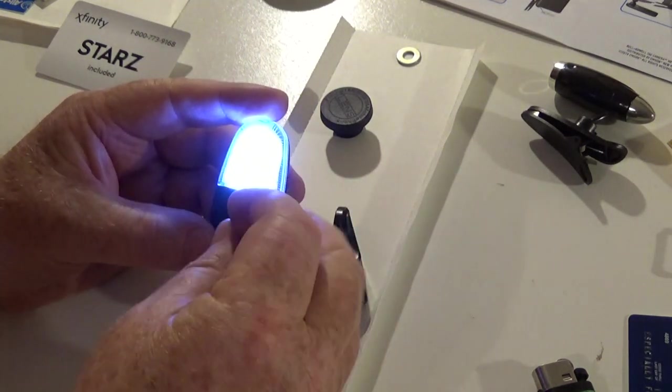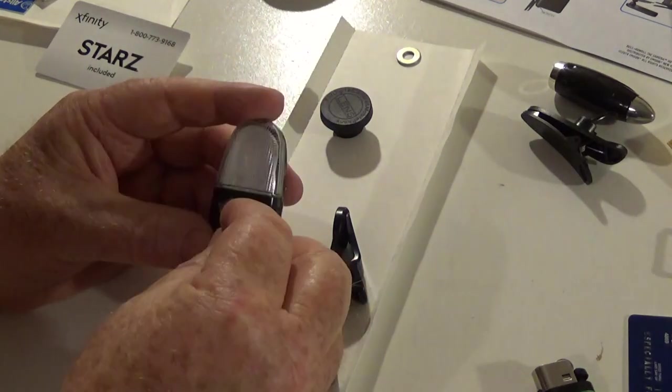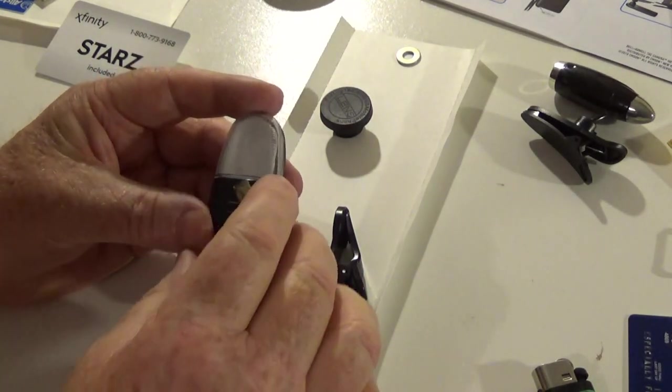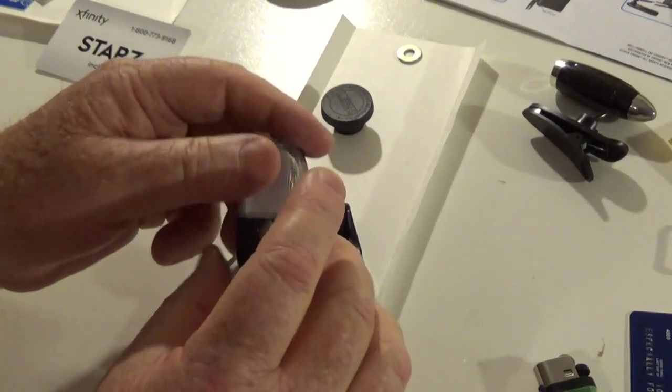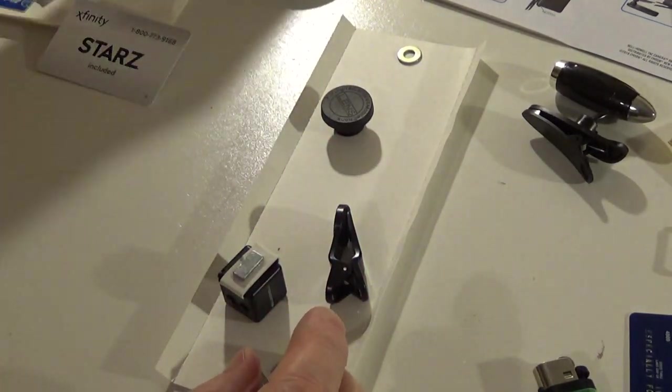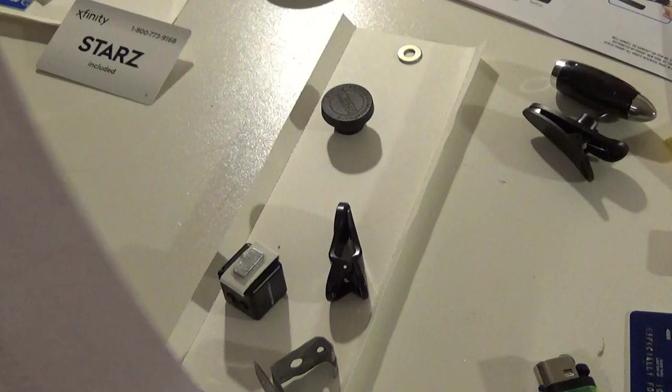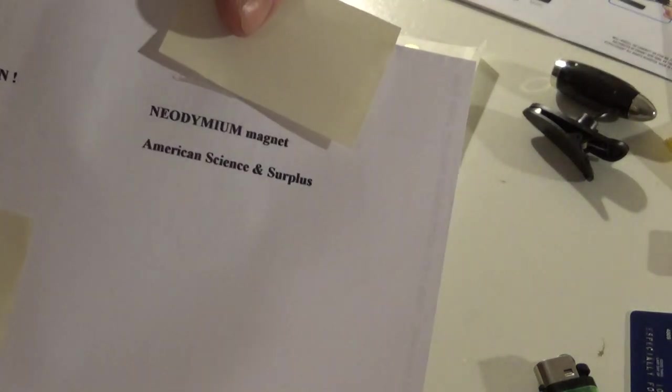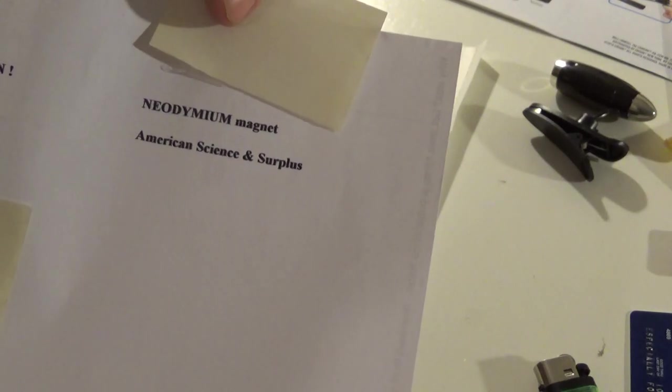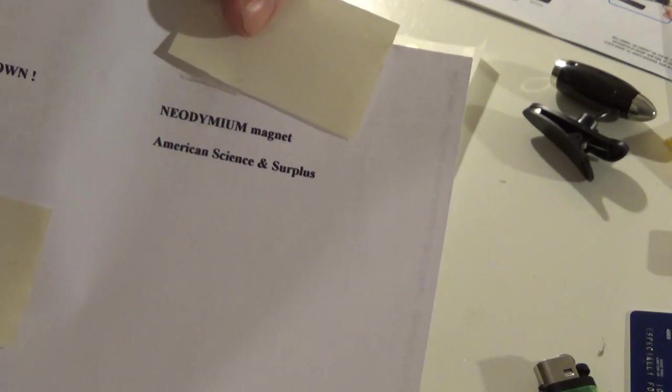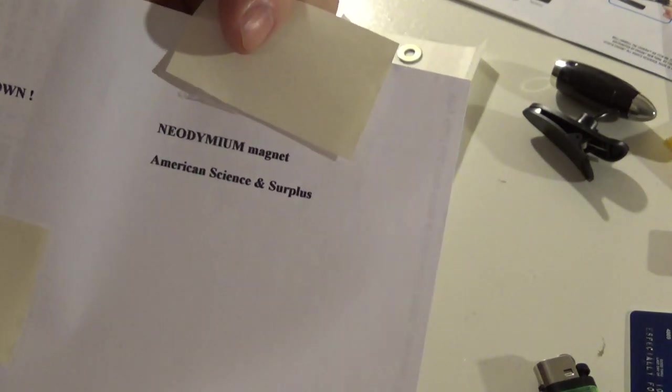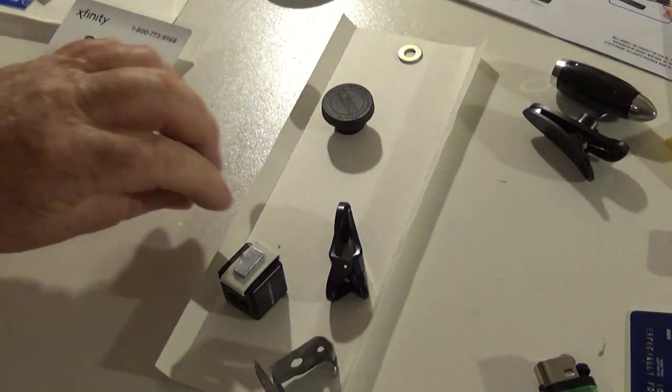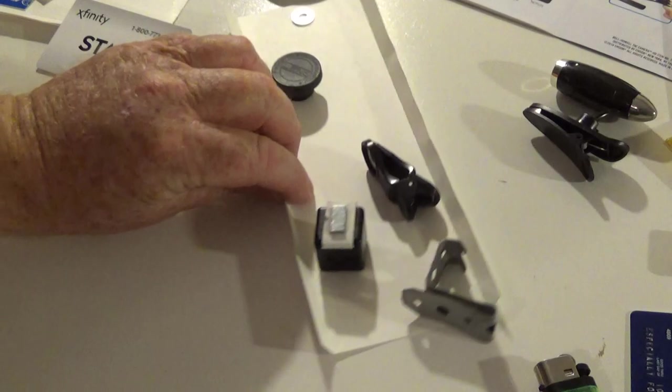These magnets are really strong for their size. The name of the magnet, you can probably get them at American Scientific Surplus, is neodymium magnet and they sell the small ones there. The magnets are really pretty strong.